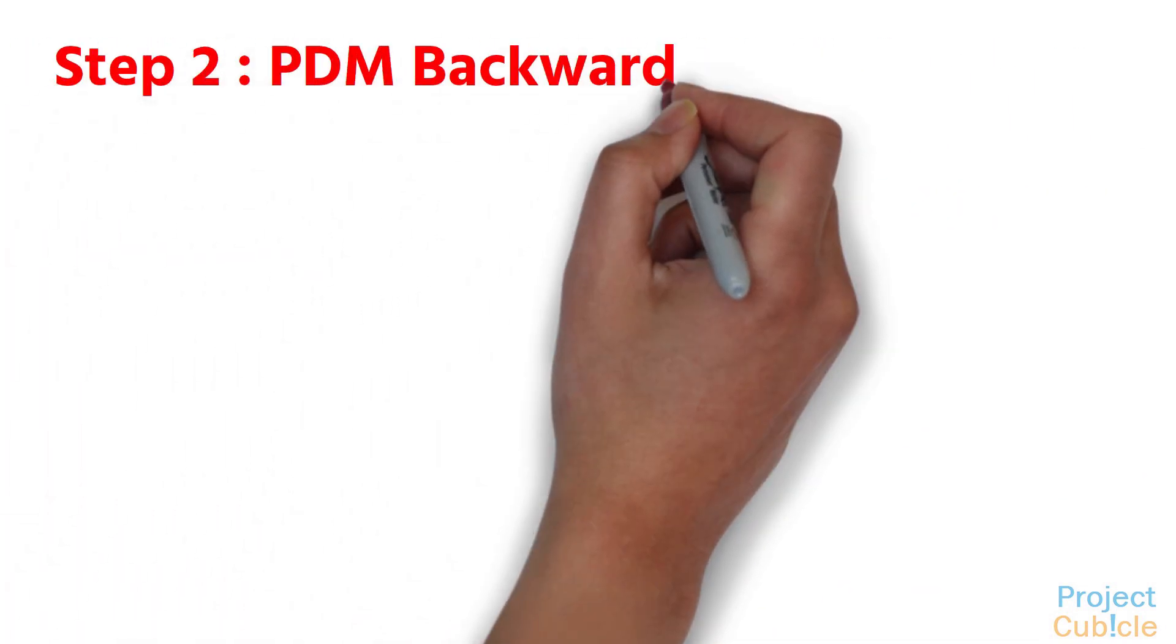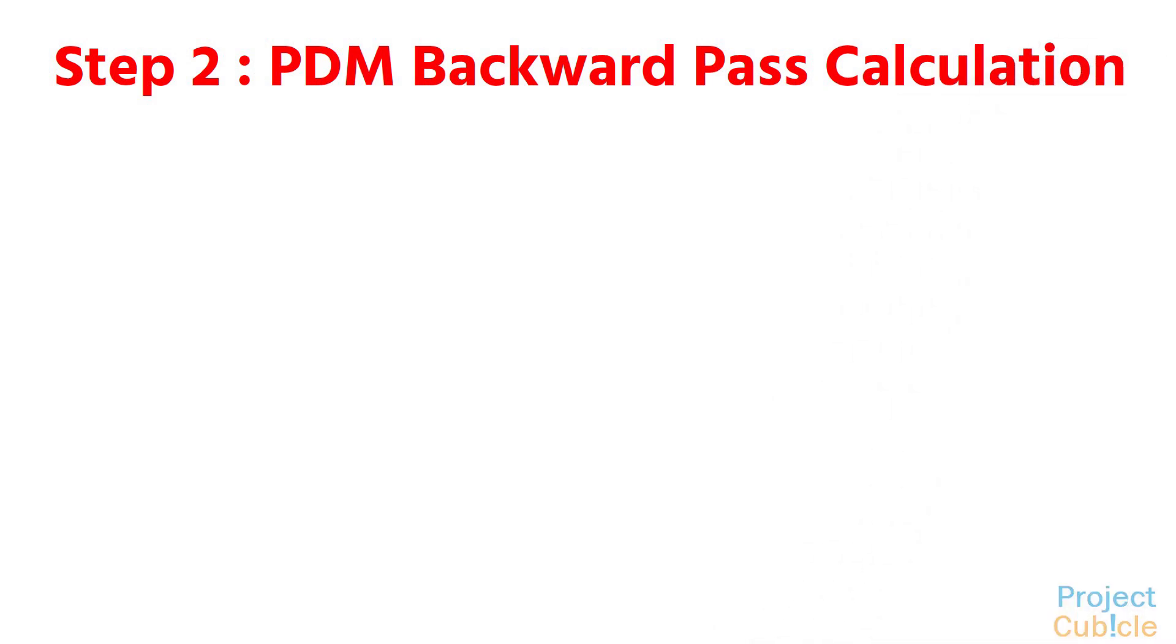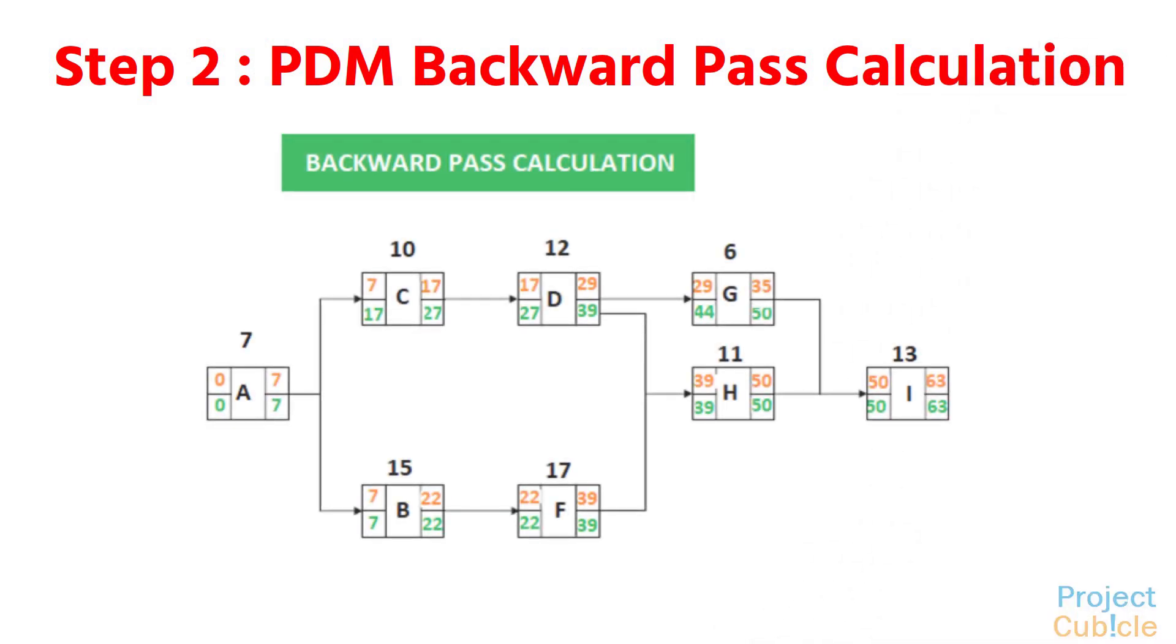Step 2: PDM Backward Pass Calculation. Backward pass calculations determine the latest dates by which each activity can be performed without increasing the project's minimum duration.